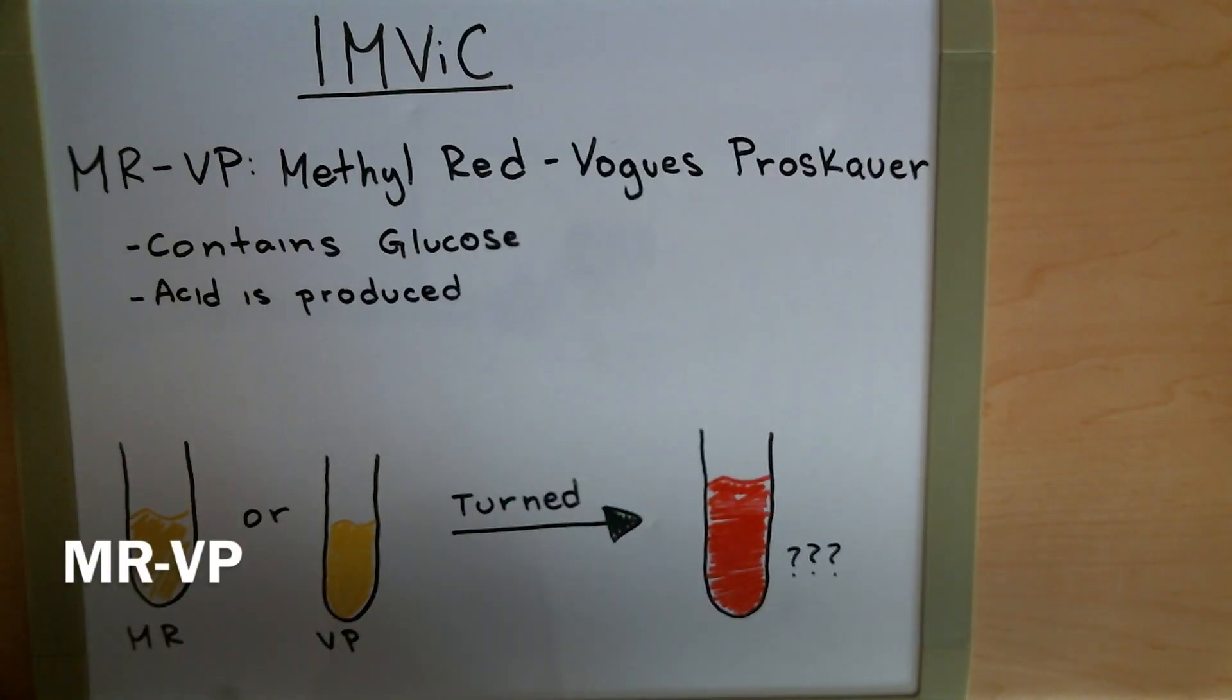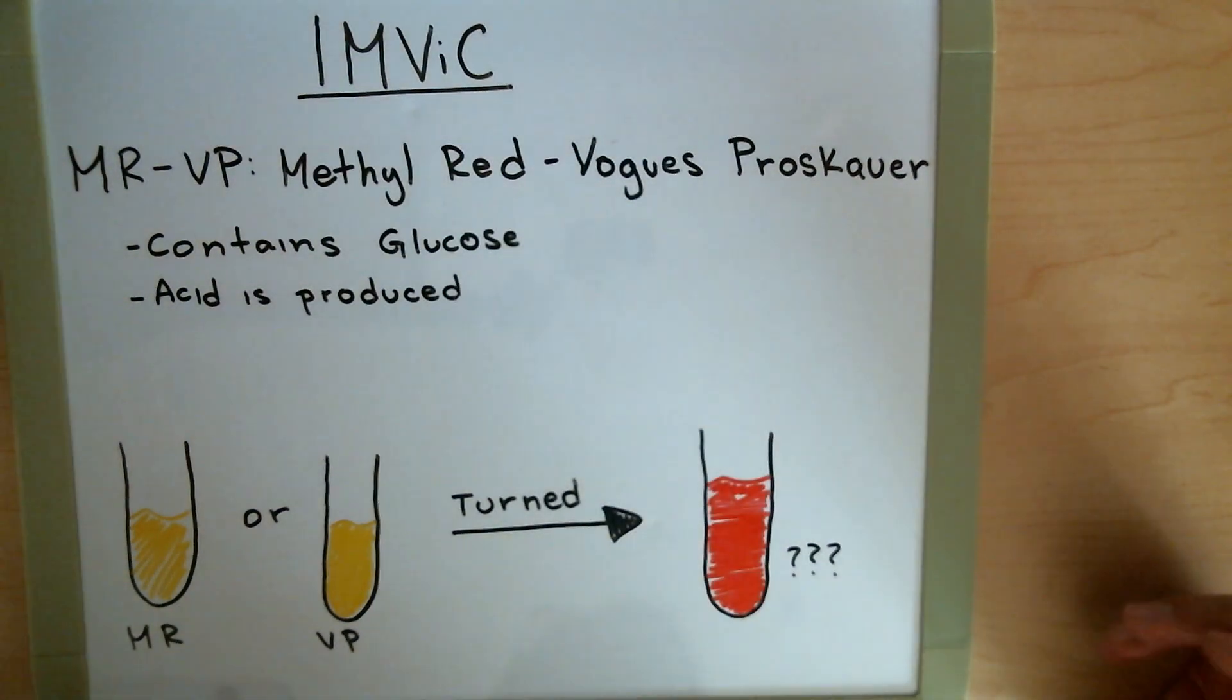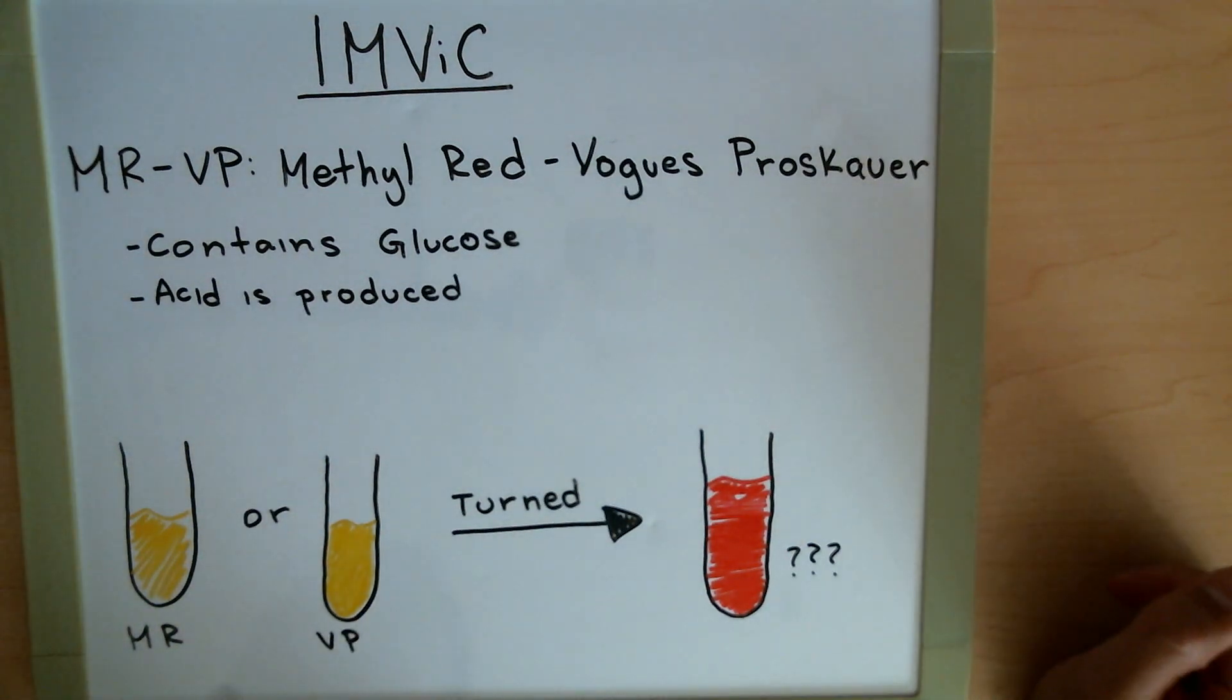With MR-VP, we're using a broth which contains the carbohydrate glucose. When bacteria ferment carbohydrates, an acid end product is produced. What MR-VP actually looks for is what the bacteria does with this acid. Does it keep the acid around or does it neutralize it afterwards?